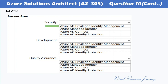For Development, the correct answer is Azure Managed Identity. Managed Identity provides an identity for an application to use when connecting to resources that support Azure Active Directory authentication. For Quality Assurance, the correct answer is also Azure AD Privileged Identity Management, which provides time-based and approval-based role activation to mitigate the risk of excessive, unnecessary, or misused access to resources.